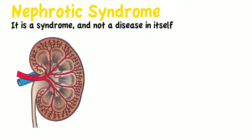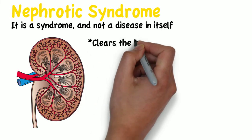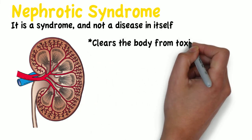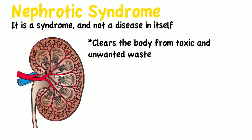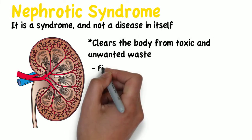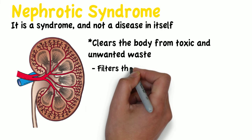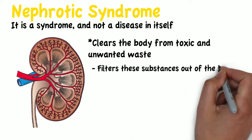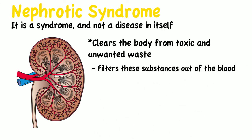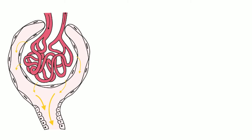One of the functions of the kidneys is to clear the body from toxic and unwanted waste, and the way it does that is by filtering these substances out of the blood. In the glomeruli of the kidneys we have the filtration barrier.